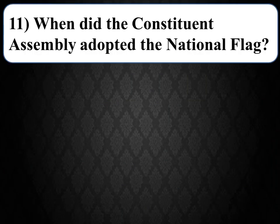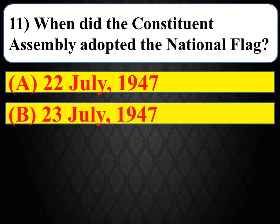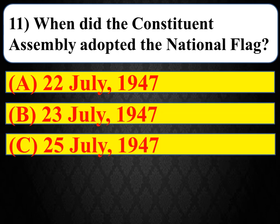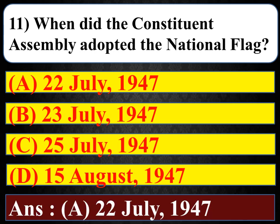Next question: when did the Constituent Assembly adopt the national flag? Options: 22nd July 1947, 23rd July 1947, 25th July 1947, 15th August 1947. The right answer is A — on 22nd July 1947, the Constituent Assembly adopted the national flag.